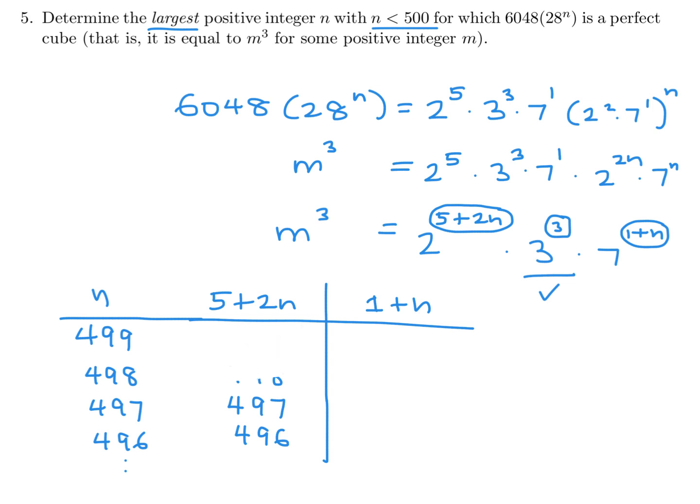Let's see what we get. We want both of them to be multiples of 3. When n is 499, this is 1003 and this is 500—not both multiples of 3. When it's 498, this is 1001 and this is 499—again, not both multiples of 3. Then when it's 497, this is 999, this is 498, and there you go—both of those are multiples of 3, and they happen when n is equal to 497, which is the answer.